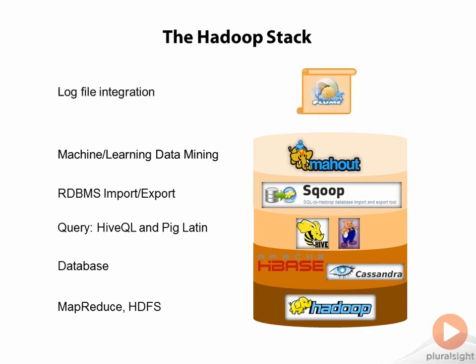Finally, as an ancillary component, we have something called Flume, which is used to deal with streaming data and merge it into HDFS. Typically that streaming data might be log files — and the word Flume and log obviously have a connection there — but Flume can be more generally thought of as a way to process streaming data into HDFS.